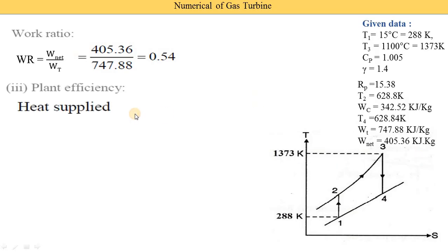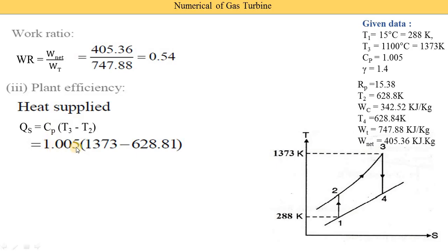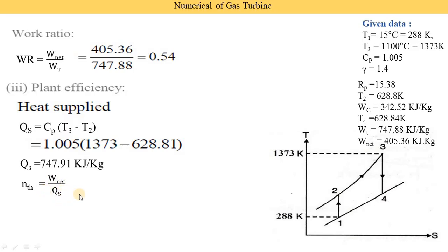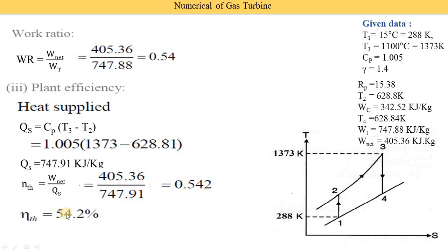The last parameter is plant efficiency, but first we need the heat supply Qs = CP × (T3 − T2) = 1.005 × (1373 − 628.81) = 747.91 kJ/kg. Plant efficiency = net work / Qs = 405.36 / 747.91 = 0.542. Multiplying by 100, thermal efficiency = 54.2%.